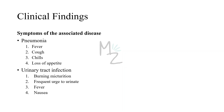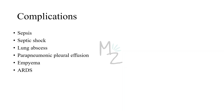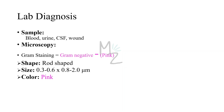Clinical findings: symptoms depend on the disease caused. If it causes pneumonia, symptoms include fever, cough, chills, and loss of appetite. If it causes UTI, symptoms include burning micturition, frequent urge to urinate, fever, and nausea. Complications include sepsis, septic shock, lung abscess, parapneumonic pleural effusion, empyema, and ARDS.